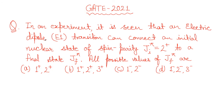Now let's start the discussion about this question. In an experiment it is seen that an electric dipole transition can connect an initial nuclear state of spin-parity J_I^π to a final state J_F^π, where π denotes the parity. The question asks: what are all possible values of J_F^π?